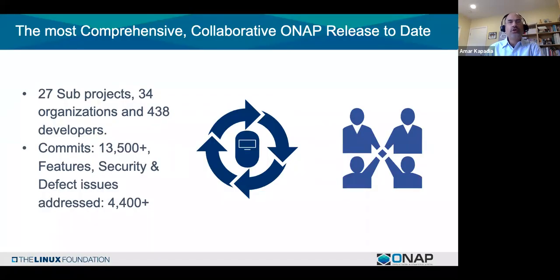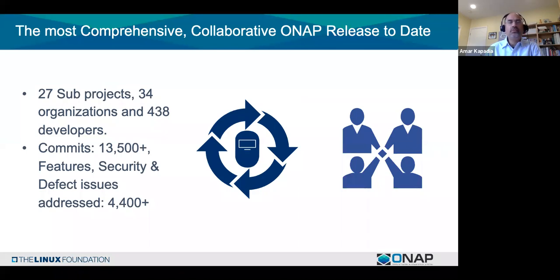Why do we call it the most comprehensive collaborative ONAP release to date? There were 27 subprojects, 34 organizations participated, 438 developers, over 13,500 commits, and over 4,400 features, security fixes, and defects addressed. No individual company can match this type of velocity and scope.